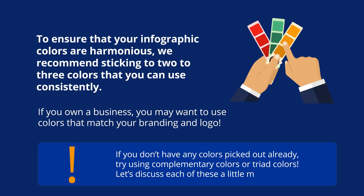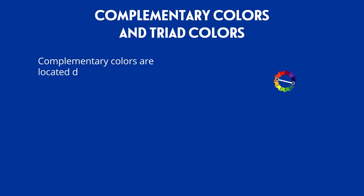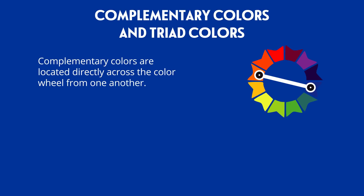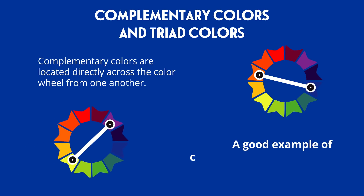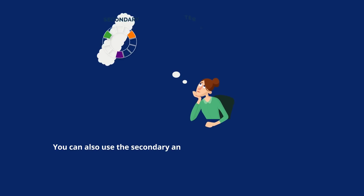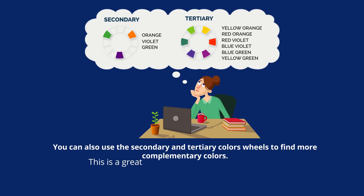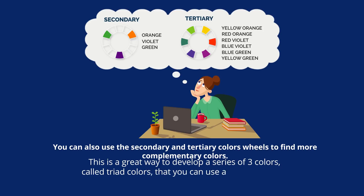Let's discuss each of these a little more. Complementary colors are located directly across the wheel from one another. A good example of complementary colors are yellow and purple. You can also use the secondary and tertiary color wheels to find more complementary colors. This is a great way to develop a series of three colors called triad colors that you can use as branding for your future infographics.